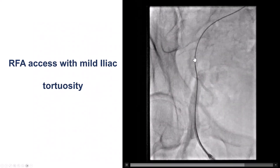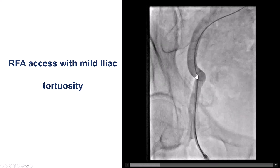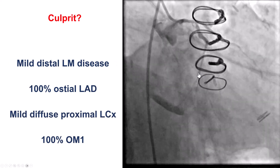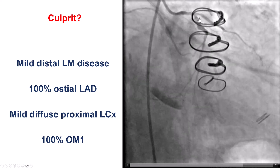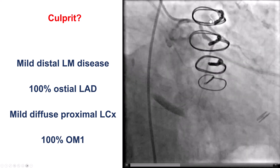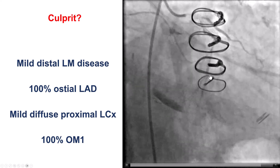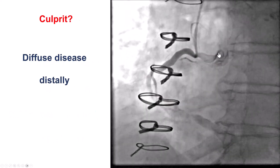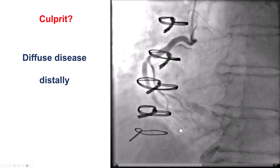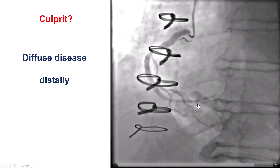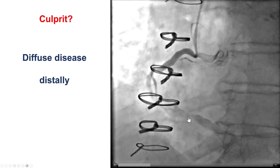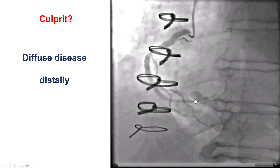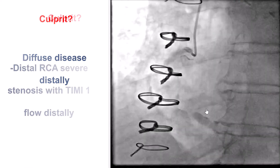We got femoral access because of the previous CABG to facilitate engagement of the bypass grafts and then the diagnostic angiography. The left main was okay. There was occlusion of the LAD, some diffuse disease in the circumflex, but the flow was okay. The right coronary artery had TIMI-2 flow, and there was some diffusely diseased distal vessel. Initially, we were concerned that maybe there is a bypass graft that is the culprit, given the contrast retention.